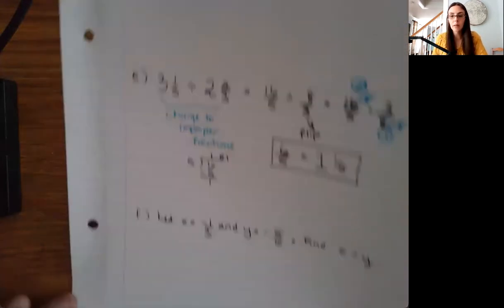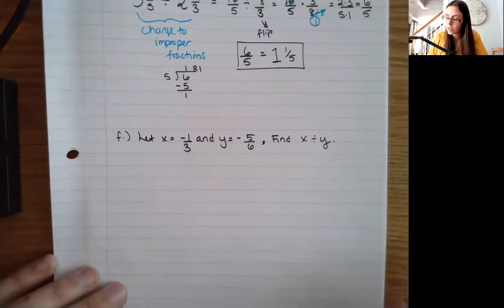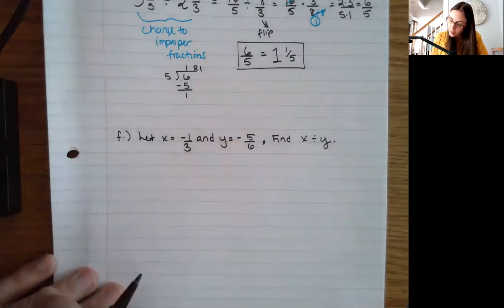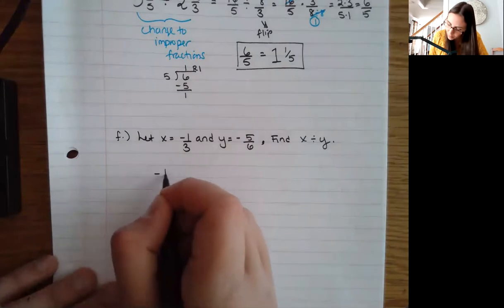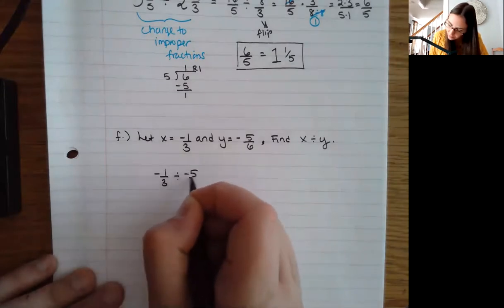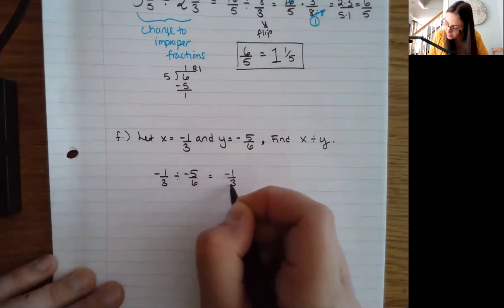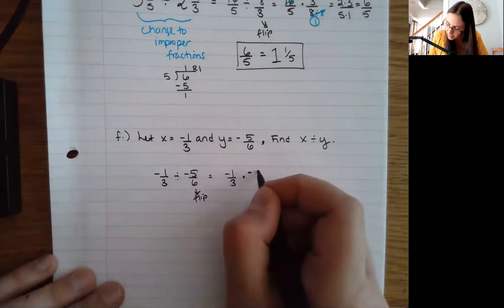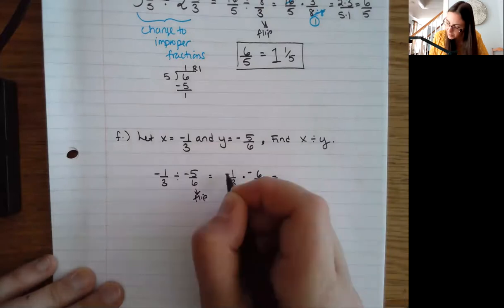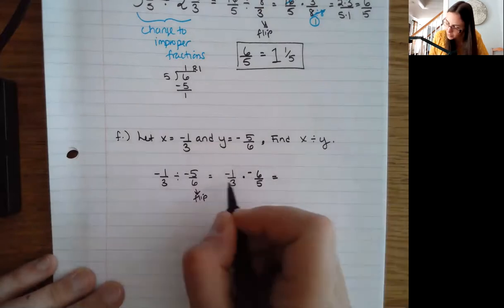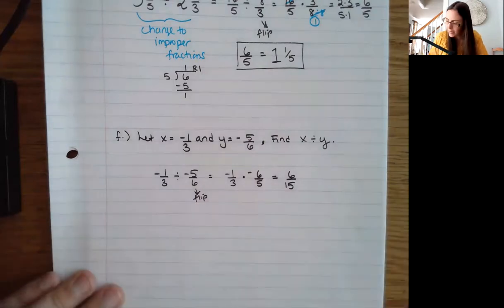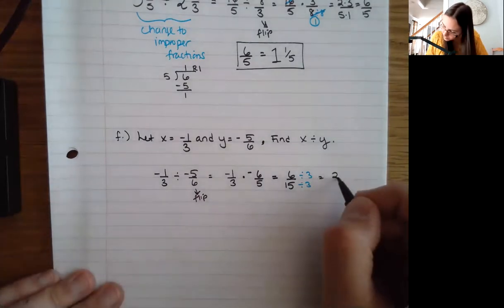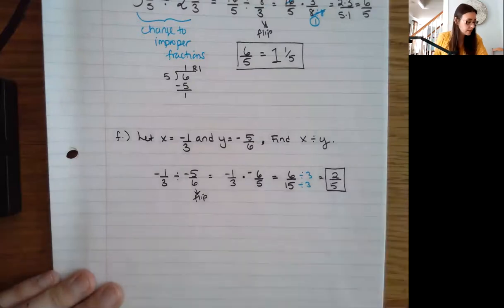We can also apply these rules to evaluation. I have the expression x divided by y, with x equal to negative 1/3 and y equal to negative 5/6. Substituting in: negative 1/3 divided by negative 5/6. No mixed numbers, so I jump right in — flip the second fraction to 6/5. Negative times a negative is a positive. Multiplying straight across gives 6/15. I have a factor of 3 in common, giving 2/5 as my final result.